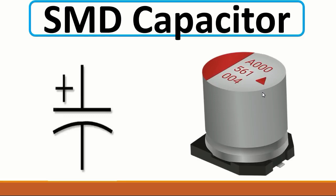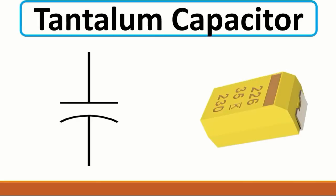Let's see the next component. Here we have another capacitor that not all technicians know about — this is basically a tantalum capacitor. This capacitor is also a polarized capacitor. As you can see, we have plus and minus: this bar here means we have the positive terminal, and over here we have the negative terminal. This one is also used to filter the current; you can find it in the power rail of any circuit in the motherboard.